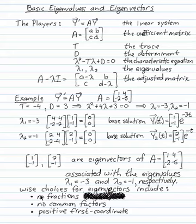When you're choosing eigenvectors, make things as easy on yourself as possible. Don't choose fractions if you can avoid it, and you can almost always avoid it. Don't choose eigenvectors with common factors - that just makes numbers larger than they need to be. And if you can, just lead off with a positive first coordinate. It makes things easier to look at.